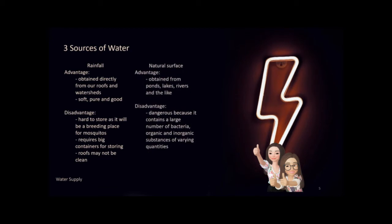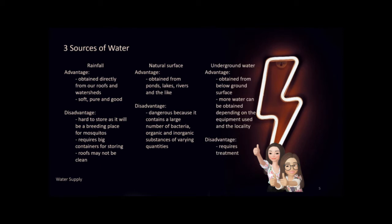The second source is natural surface water, which can be obtained from ponds, lakes, rivers, and the like. It is easy to procure and good for localities near such bodies of water. The disadvantage is that it is dangerous because it contains large amounts of bacteria and organic and inorganic substances. The third is underground water, obtained from dug and drilled wells. Its advantages are that it can be obtained from low ground by mechanical and manual equipment, and more water can be obtained depending on equipment and locality.